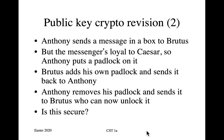Antony removes his padlock and sends the box back to Caesar, who can now undo his padlock and get the message out — 'Dear Brutus, let's murder Caesar. Yours, Antony.' So now Caesar has got hanging evidence against Antony, and he runs the protocol again with Brutus and gets hanging evidence against Brutus, and he can then have both their heads cut off in the forum on the Ides of March, rather than dying himself, as happened all those years ago.